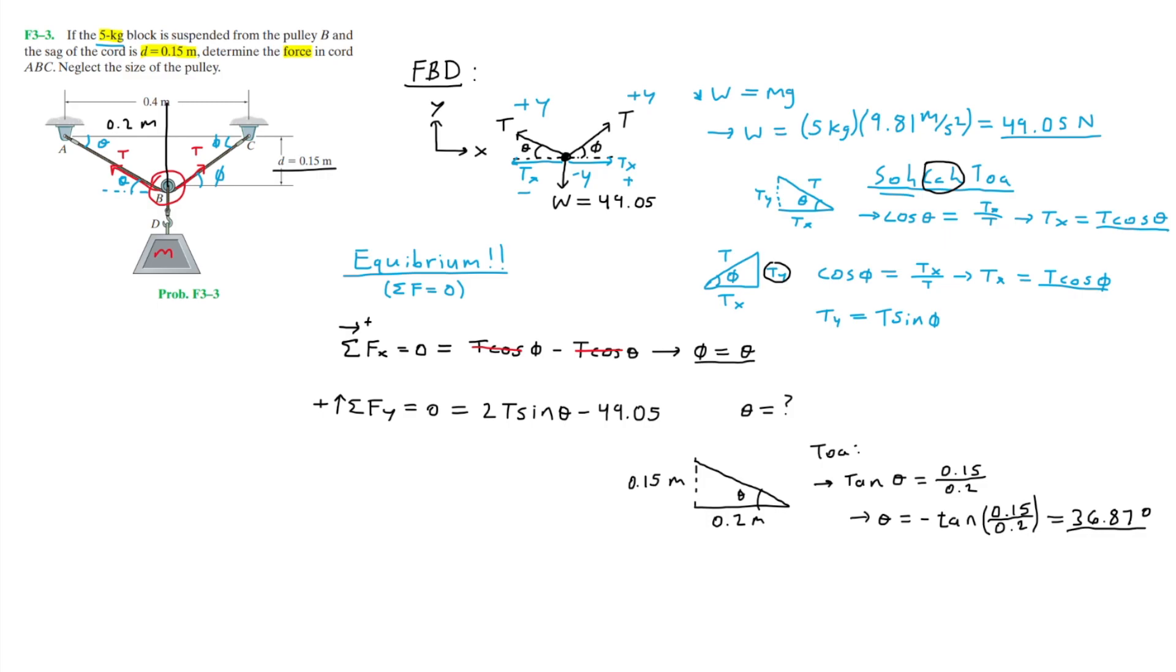Now that we found theta, we can finally solve for T by plugging in the value of theta into the equation for the sum of forces in the y direction. Rewriting to solve for T, we have T equals 49.05 divided by 2 sine of 36.87, which equals 40.87 newtons.